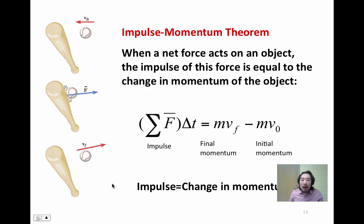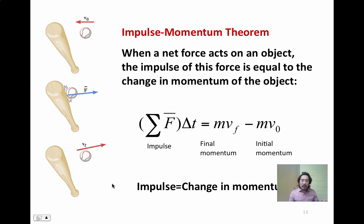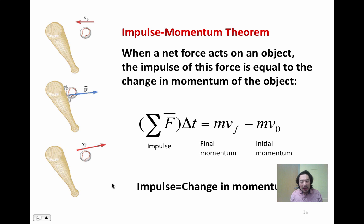We can use that equation and link it with momentum to come up with the impulse-momentum theorem. Basically what it says is that the impulse of the system is equal to the momentum of the system. Take a look at this equation — we'll be working more with it. The right-hand side of the equation is actually one half of the conservation of momentum equation, and in the following videos we'll do a couple of examples with that.